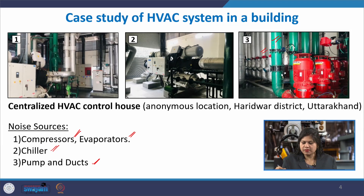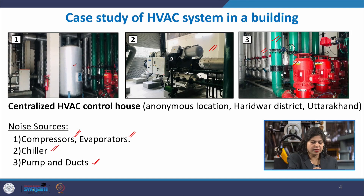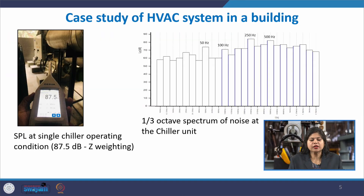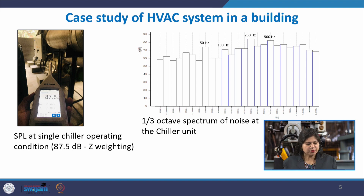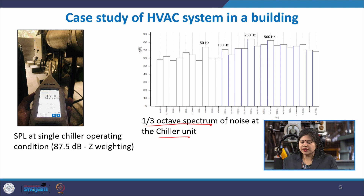When we went into that HVAC system and measured the noise level, one typical measurement at a single chiller operating condition showed an SPL of 87.5 decibels on the Z-weighting scale. The one-third octave spectrum shows the noise is typically low-frequency content, with major peaks at 50 Hz, 100 Hz, 250 Hz, and 500 Hz.